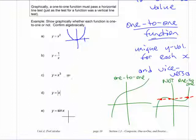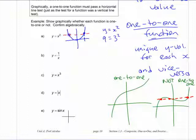For any x value you pick — first of all, is that a function? It is a function, because if you take any x value, you only get one y value. Algebraically, if you take a number and put it in, like three squared, you get nine — a single value. Is it a one-to-one function? No, because if I draw a horizontal line, I get two different places.